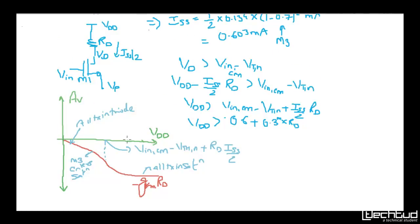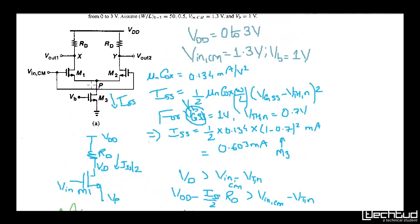From the plot, when Vdd = 0 all transistors are in triode. M3 will enter saturation first. The condition for M3 saturation is Vp ≥ Vp − Vt3, so when Vp is approximately 0.4V, M3 enters saturation. At that point, Vin_common_mode is 1.3V and the source node Vp is 0.4V, making Vgs of M1/M2 approximately 0.9V. Vgs of M3 is 1V, so M3 is now in saturation.